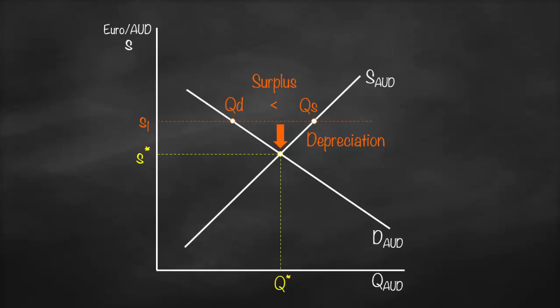Let's do the opposite. Let's assume that we have an exchange rate below our equilibrium exchange rate at S2. It will intersect with our supply curve and it will give us our quantity supplied of Australian dollar. It will intersect with our demand curve and will give us our quantity demanded of Australian dollar.